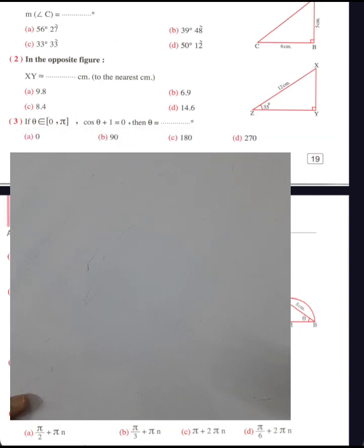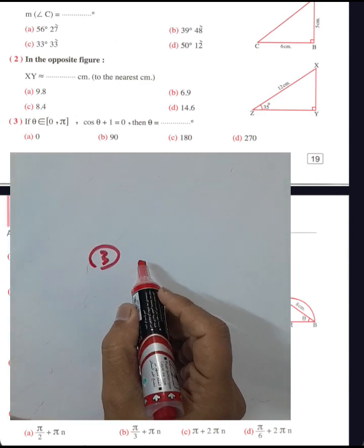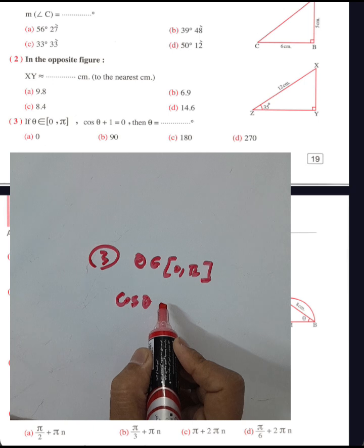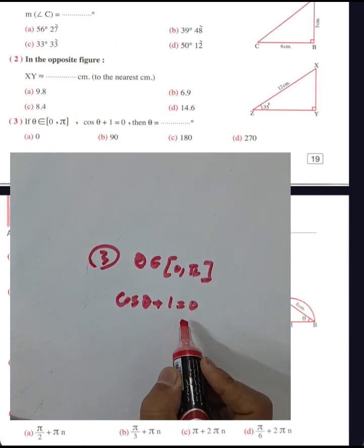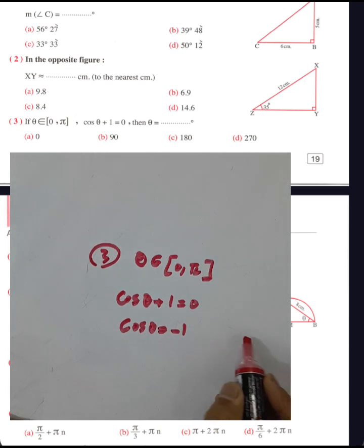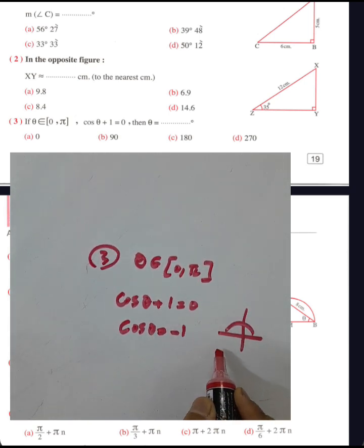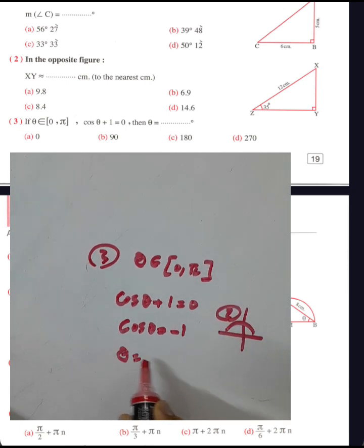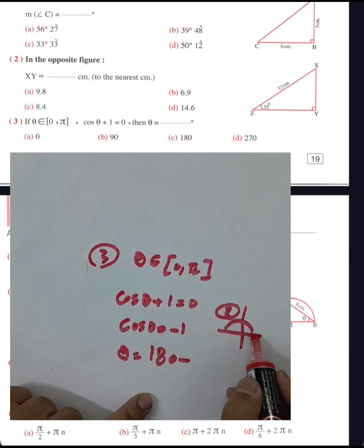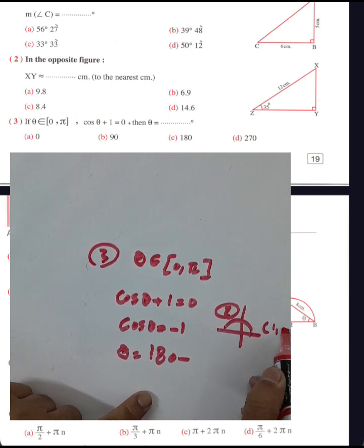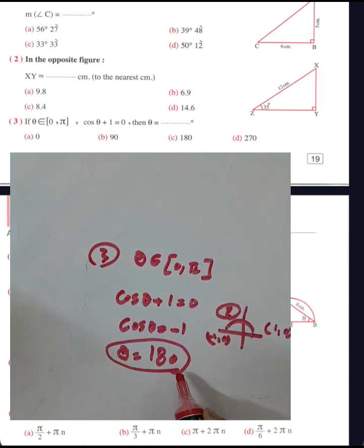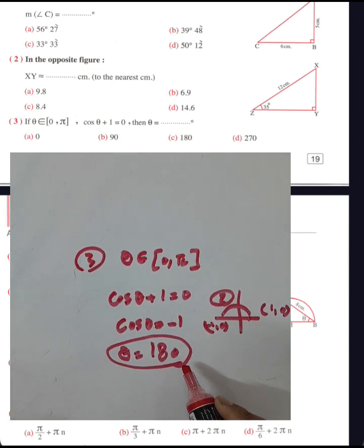Question number three: if theta belongs to the closed interval and we have cosine theta plus one equals zero, then we want to find angle theta. We know cosine theta equals negative one. Given the solution from 0 to 180, cosine is negative in the second quadrant. The point negative one and zero corresponds to 180 degrees, so cosine 180 equals negative one, and theta equals 180 degrees.